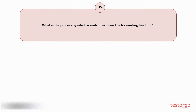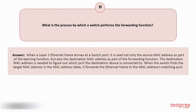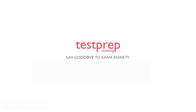Question number fifteen: What is the process by which a switch performs the forwarding function? Your answer is: When a Layer 2 Ethernet frame arrives at a switch port, it reads not only the source MAC address as part of the learning function, but also the destination MAC address as part of the forwarding function. The destination MAC address is needed to figure out which port the destination device is connected to. When the switch finds the target MAC address in the MAC address table, it forwards the Ethernet frame to the matching port.